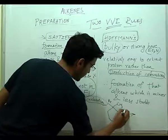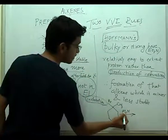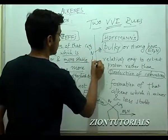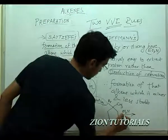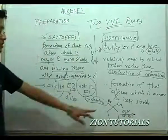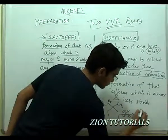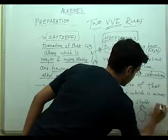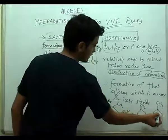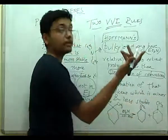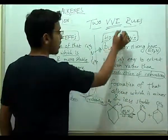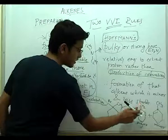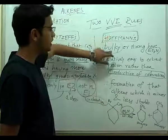If the reaction uses Et3N (triethylamine) or any bulky base — one nitrogen with three ethyl groups (C2H5, C2H5, C2H5), which is very bulky — along with alcoholic KOH and other dehydrohalogenation conditions, we find two products. One product has a double bond with a C2H5 substituent (more stable, more alkyl groups) — this would normally be major by Zaitsev's rule, but with a bulky base and Hofmann's rule, it is the minor product. The less stable, less substituted product is the major product due to the bulky base.